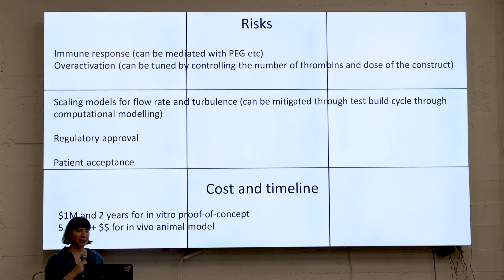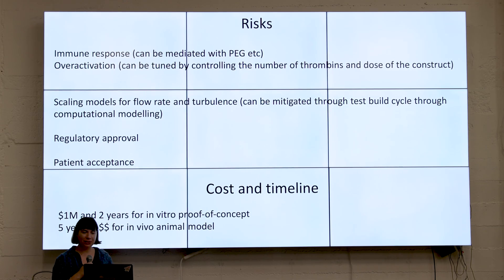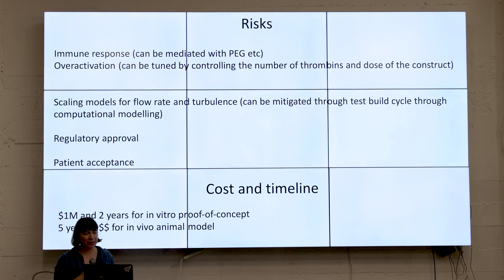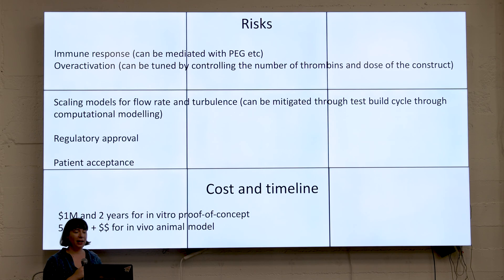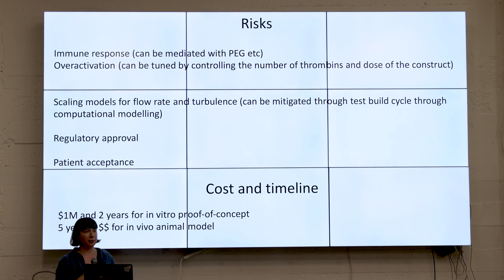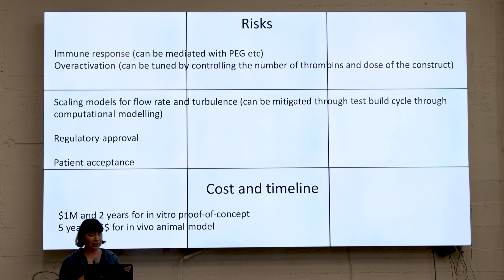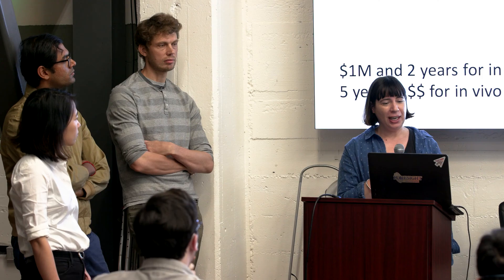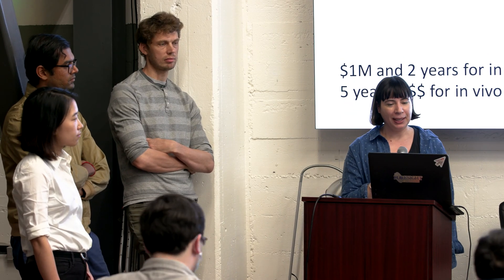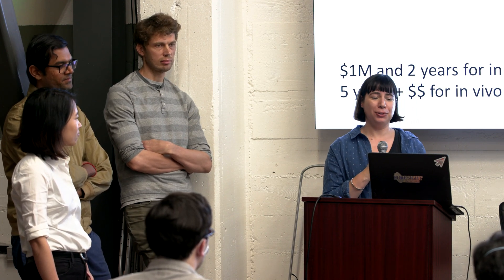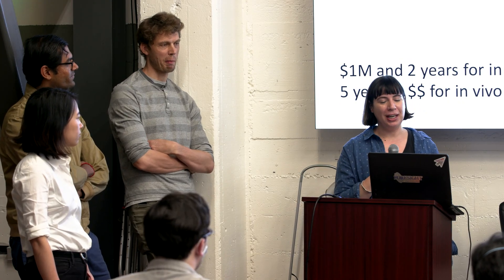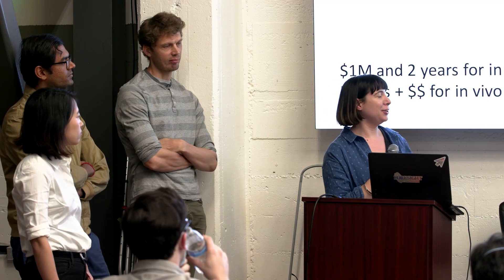For risks we're thinking of: there's quite a lot that can happen when working with biomedical systems — immune responses, over-activation — and we're hoping that external control can give us a handle on some of those risks, which are risk profiles of the drugs we already have. In terms of the science, it's hard to scale models for flow, and we need to think about turbulence and how in vitro models represent what's going to happen in the body. We also need to think about regulatory approval and whether patients will accept these devices in the clinic. In terms of cost and timeline, we're thinking at least one to two years for an in vitro proof-of-concept and five years for some sort of animal model.